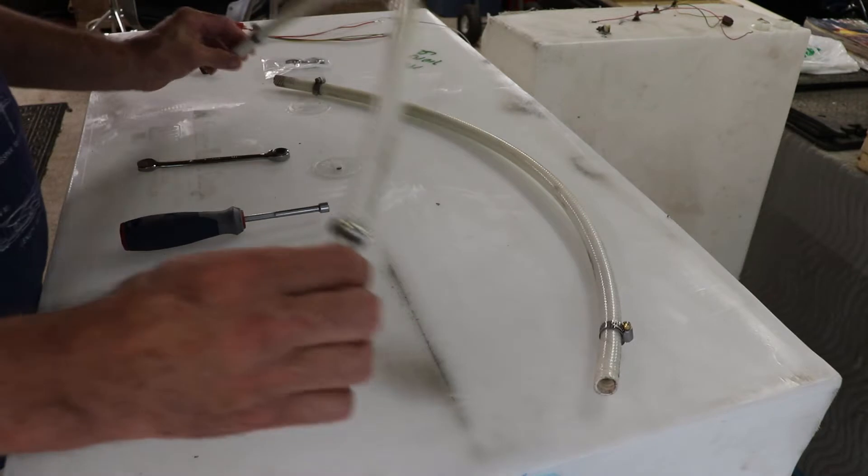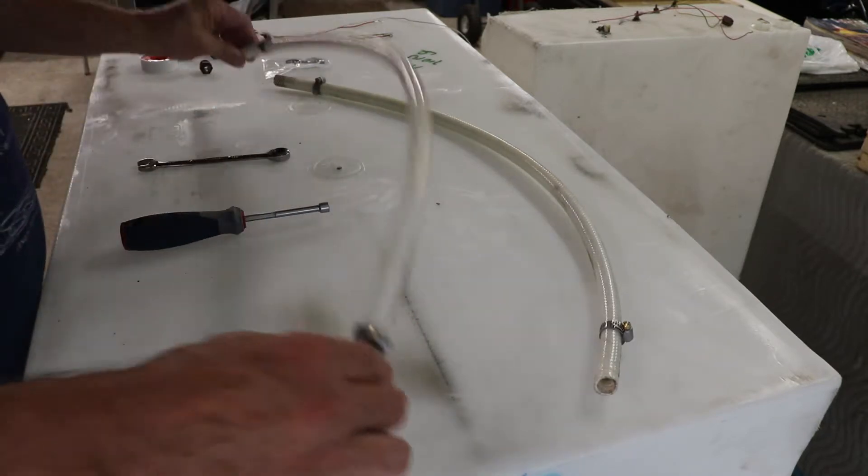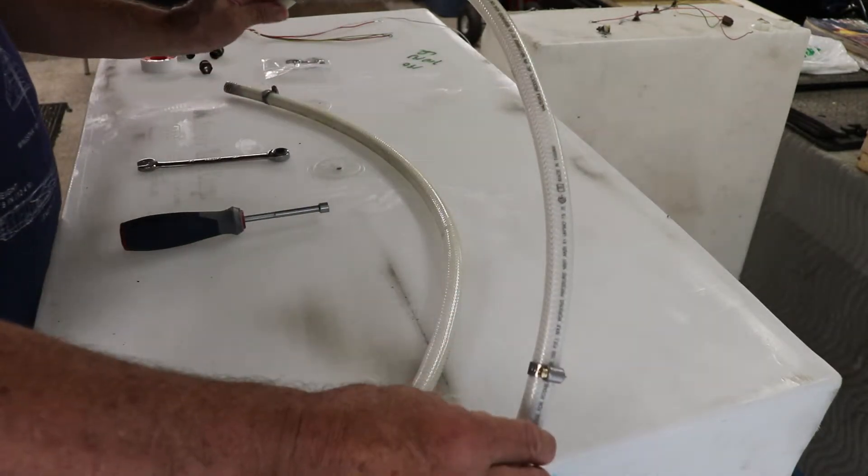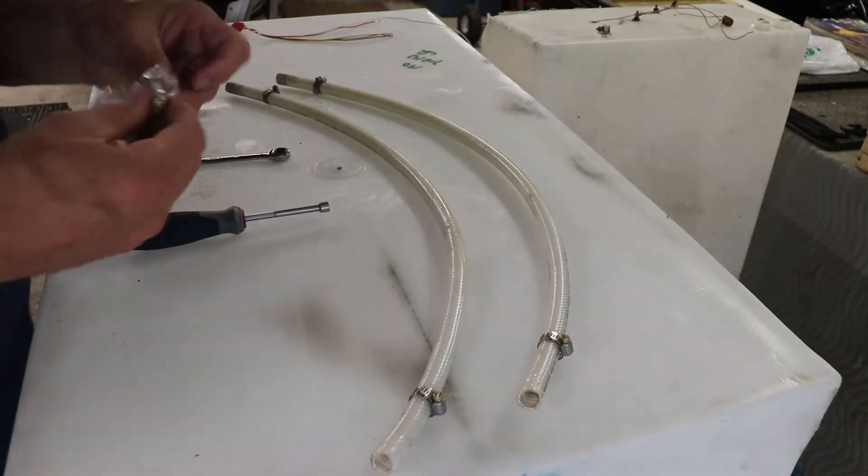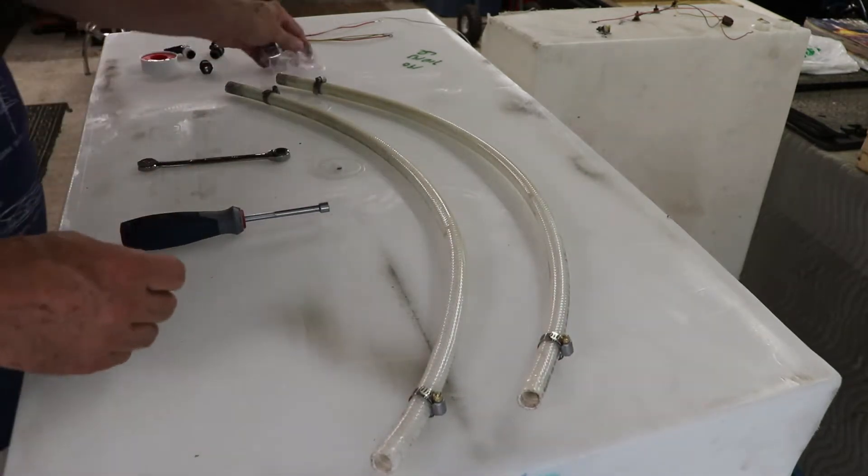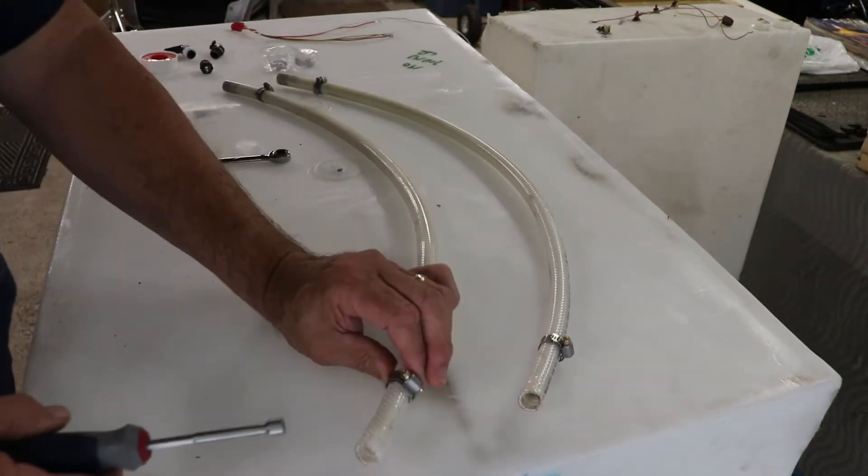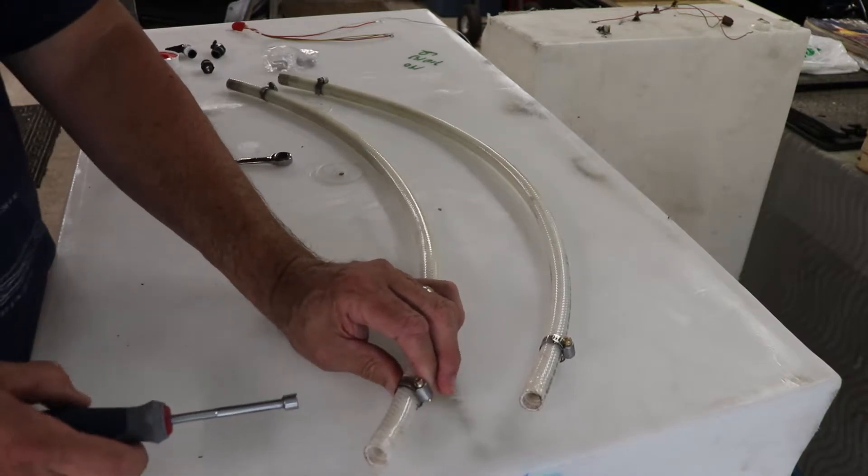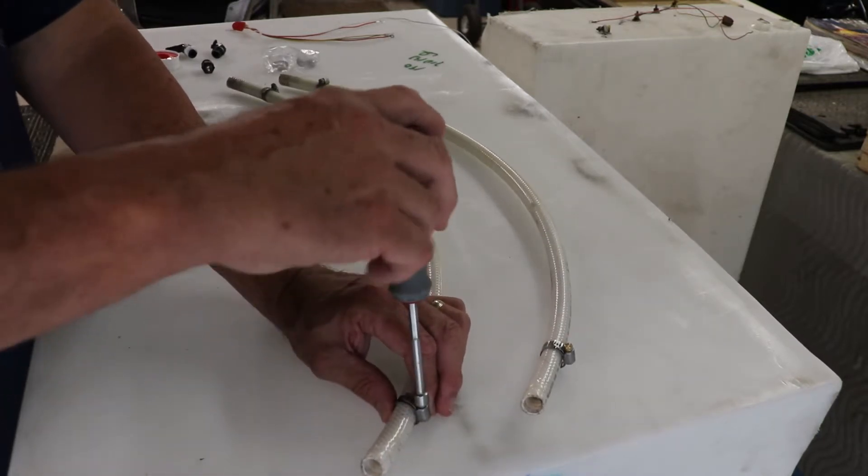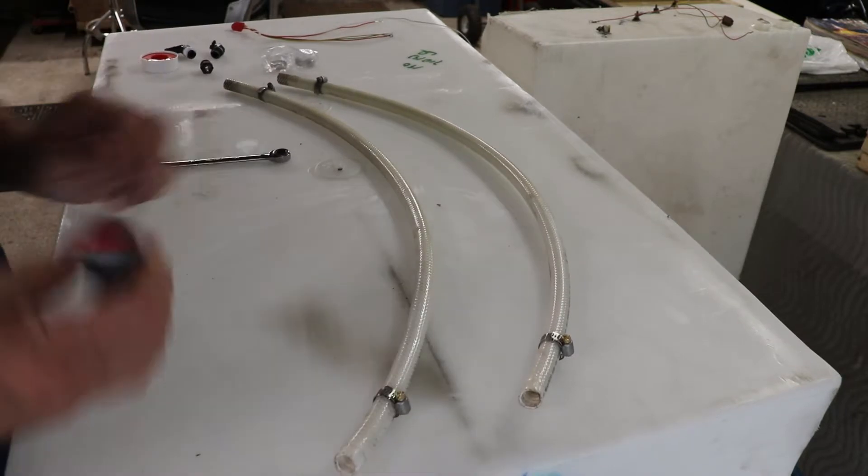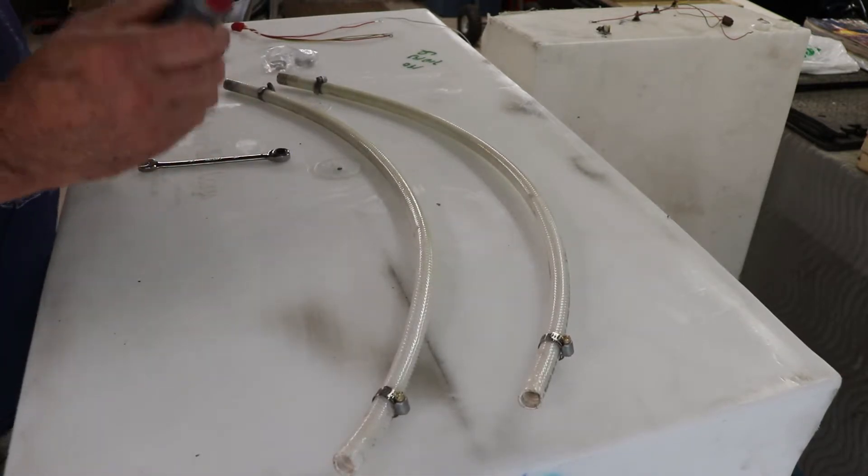Now the hoses I was able to salvage, just cleaned them up and then I also picked up some more hose clamps, and those I just lightly set them on the ends and tighten them down a little bit with a quarter inch driver.